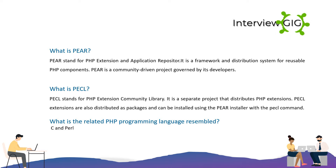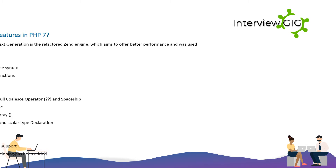What is the related PHP programming language that PHP resembles? C and Perl. What are the main features in PHP 7? PHPNG, which stands for PHP Next Generation, is the refactored Zend Engine which aims to offer better performance and was used as the basis for PHP 7.